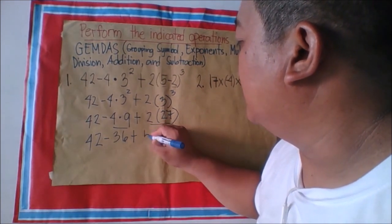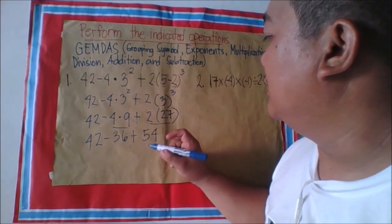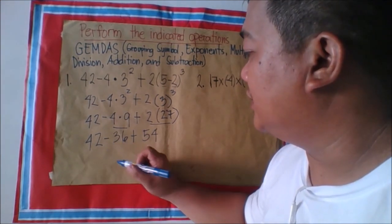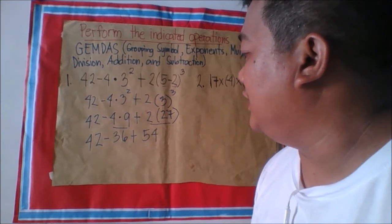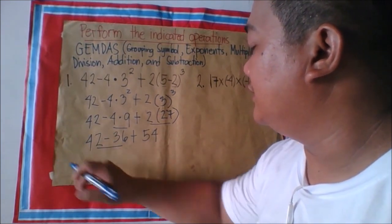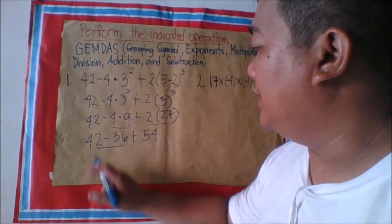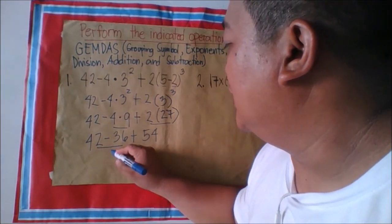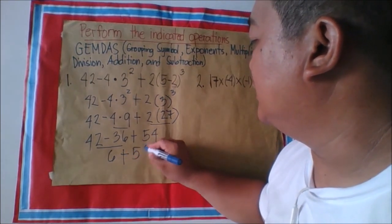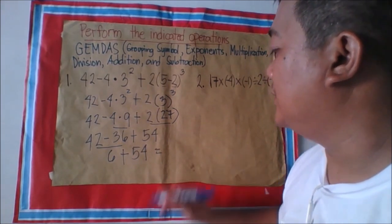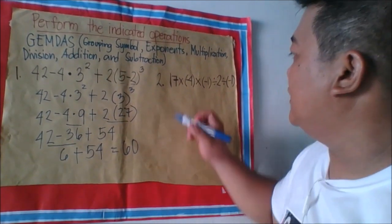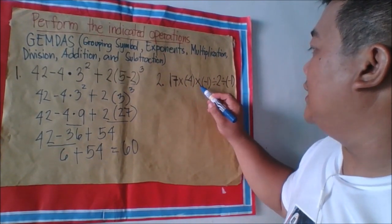Okay, so from this order, subtraction is on the left, so we evaluate left to right. 42 minus 36 equals 6, then 6 plus 54 equals 60. So the answer to the first expression is 60. Next, the expression is 17 times negative 4 times negative 1, divided by 2, divided by negative 1.